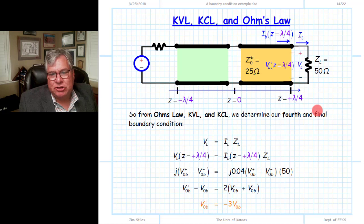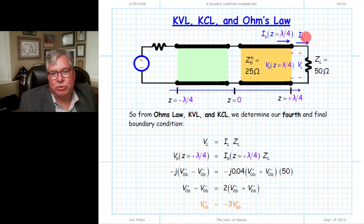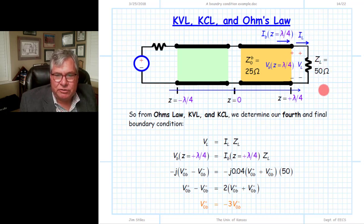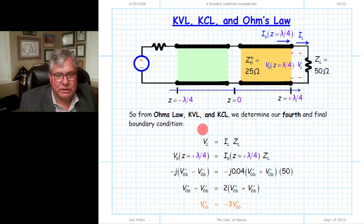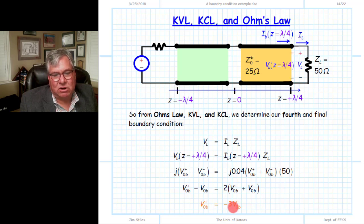Our final boundary condition equation comes from applying Ohm's Law in addition to KVL and KCL. From Ohm's Law, the load voltage divided by the load impedance equals the load current. By KCL, the current at the end of this line equals the load current, and by KVL, the voltage at the end of the second line equals the voltage across the load. Combining these gives our fourth equation relating the unknown wave amplitudes.